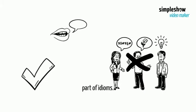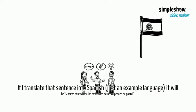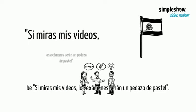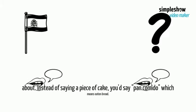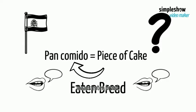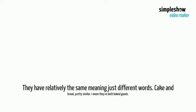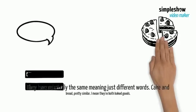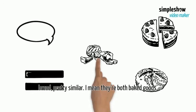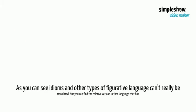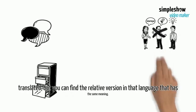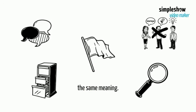If I translate that sentence into Spanish, just as an example language, it will be: "Si miras mis videos, los exámenes serán un pedazo de pastel." If you tell a Spanish speaker this, they'll have no idea what you're talking about. Instead of saying "a piece of cake," you'd say "pan comido," which means "eating bread." They have relatively the same meaning, just different words — cake and bread, pretty similar. I mean, they're both baked goods. As you can see, idioms and other types of figurative language can't really be translated, but you can find the relative version in that language that has the same meaning.